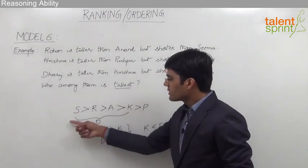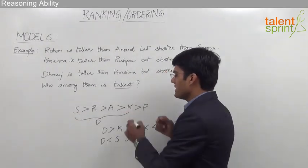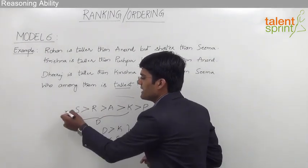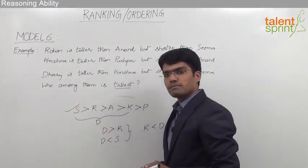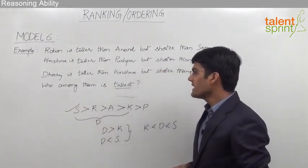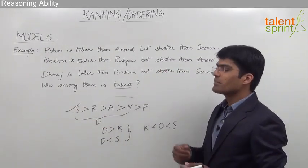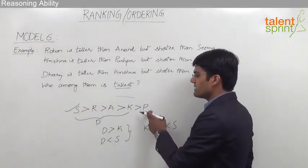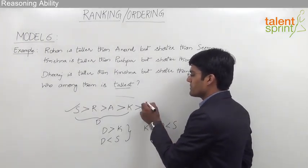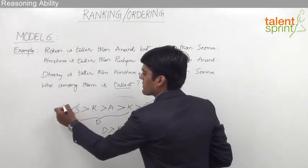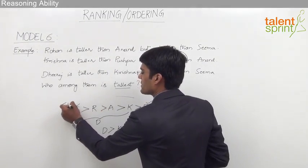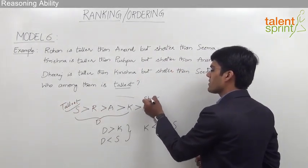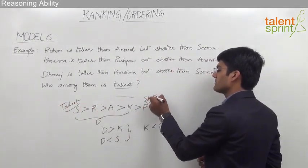So very clearly, the tallest person in this group is Sima. The tallest person is Sima and the shortest person in the group is Pushpa.